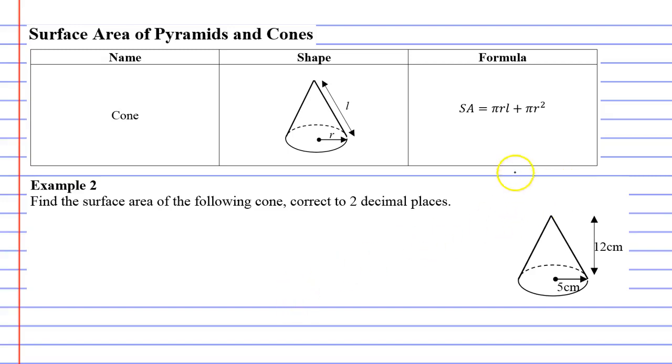There are two parts to the formula. There's πrl which finds you the area of the cone piece, the top cone here, and then we've got πr² which they add on.